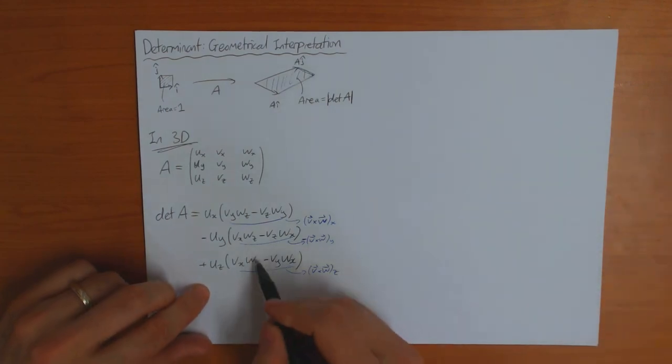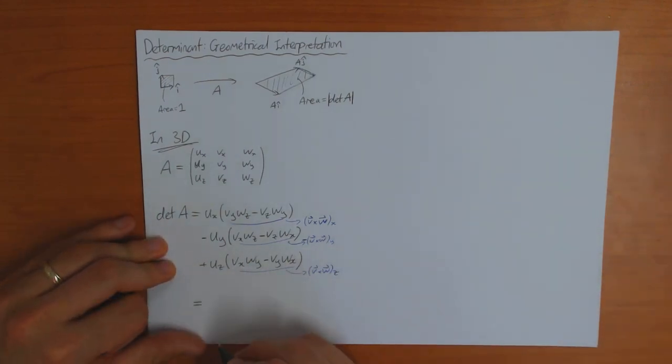And then finally add the Z component of U times the Z component of the vector product. But that is just a scalar product of two vectors. So the determinant of A is equal to the vector U, scalar product, the vector product of vectors V and W.